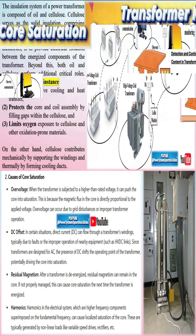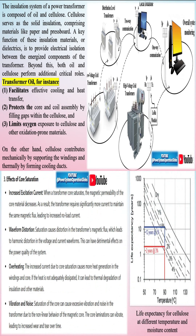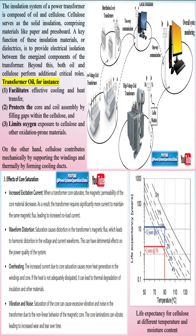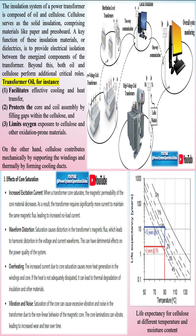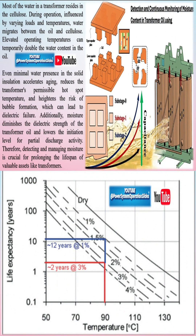The insulation system of a power transformer is composed of oil and cellulose. Cellulose serves as the solid insulation, comprising materials like paper and pressboard. A key function of these insulation materials, or dielectrics, is to provide electrical isolation between the energized components of the transformer. Beyond this, both oil and cellulose perform additional critical roles.